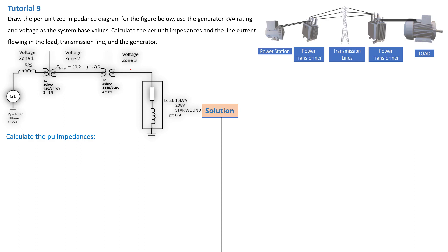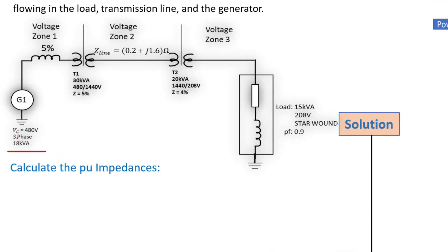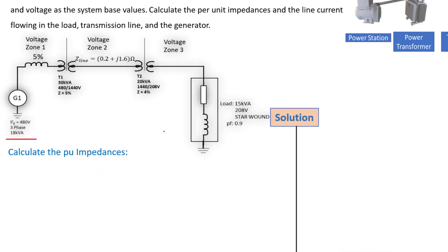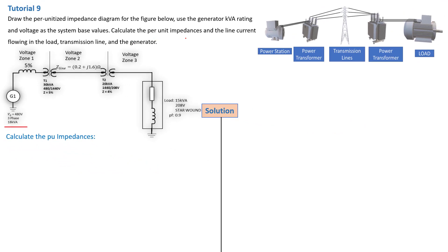Welcome back to this tutorial on per unit calculations — this is tutorial 9. We have a different load configuration compared to the previous tutorial. The problem statement says: draw the per unitized impedance diagram for the configuration below. Use the generator KVA rating and voltage as the system base values. We have a three-phase generator with a KVA of 18 kVA and a generator voltage Vg of 480 volts — these will be used as the base values for the entire system. We also need to calculate the per unit impedances and the line current flow in the load.